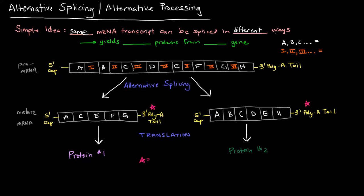Why is that significant? Because this yields different proteins from the same gene. One gene will give you one particular mRNA transcript, and once you have that mRNA transcript, if you can splice it in different ways, those mature mRNAs will be different and will yield different protein products.